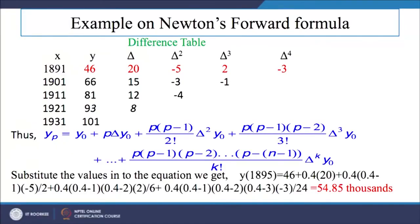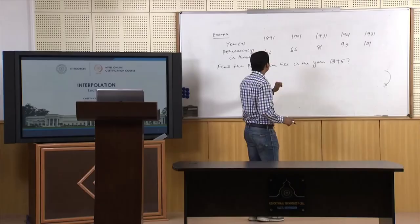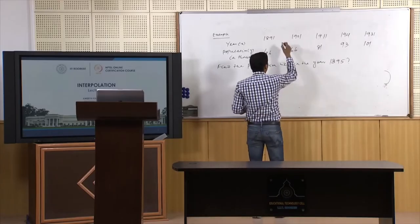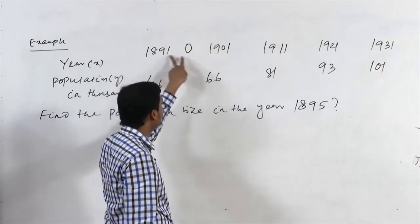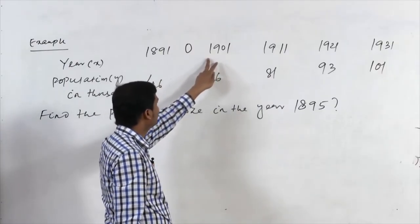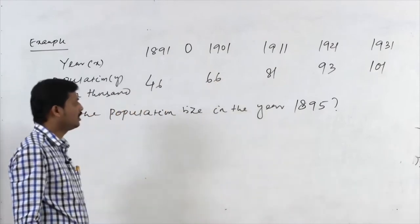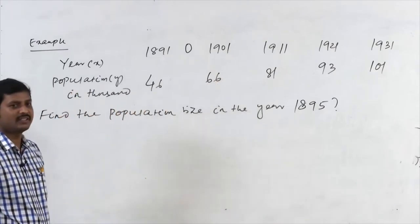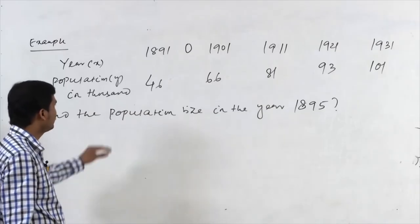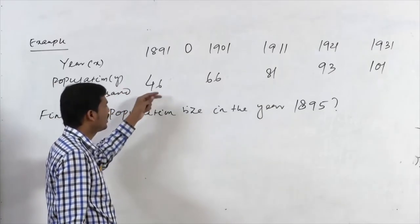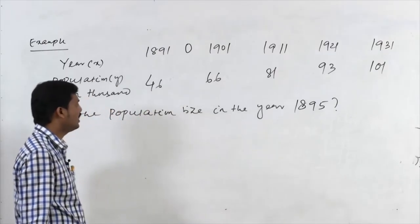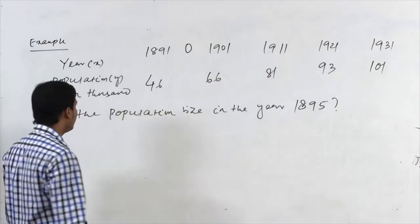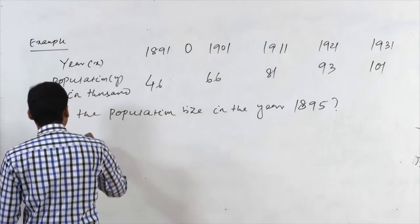Since the population level is asked for the year 1895, which exists at the beginning of the table — 1895 lies between 1891 and 1901 — we can use Newton's forward difference formula to evaluate the population size at this level. First, we will construct the difference table, collect the data, and then apply the formula to evaluate the population size in the year 1895.